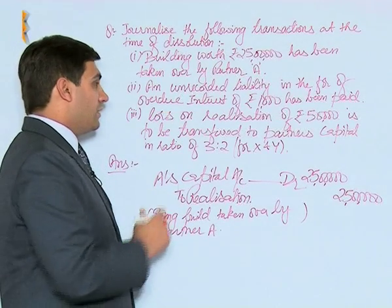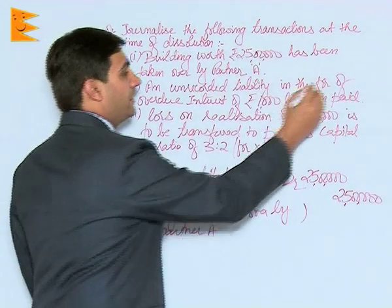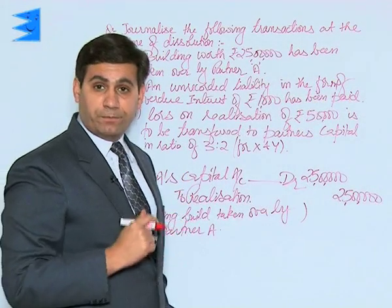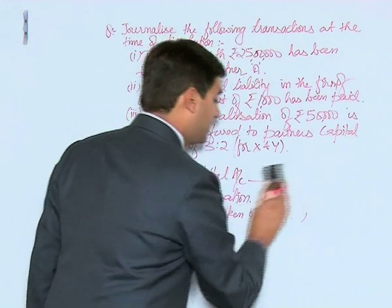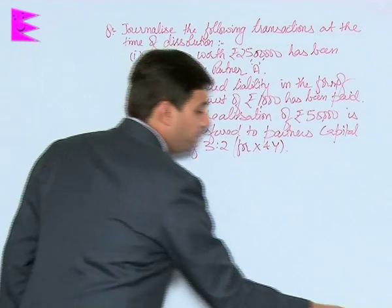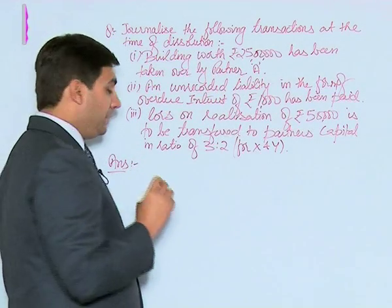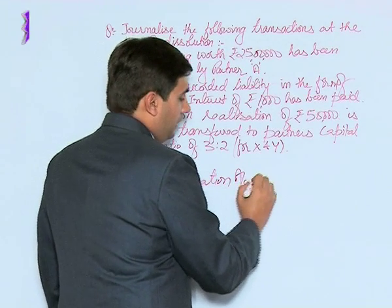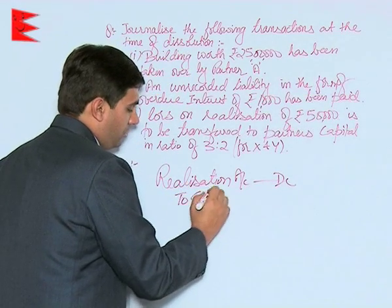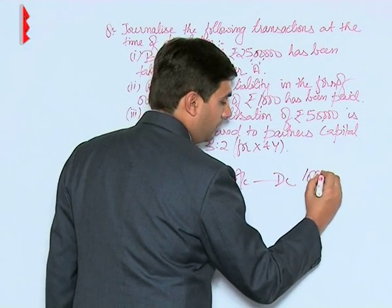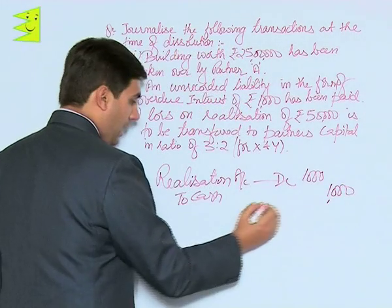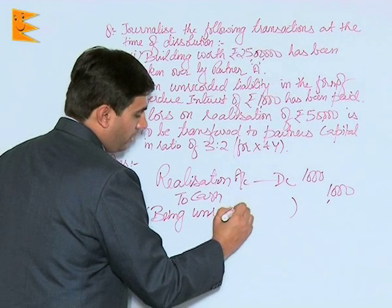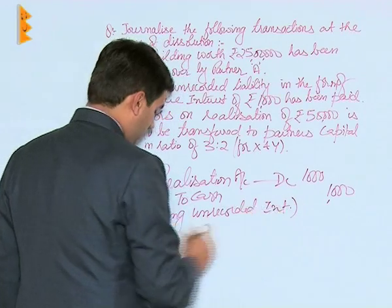Coming to the next journal entry: an unrecorded liability in the form of overdue interest for rupees 1000 has been paid by the firm. In this case, there is an unrecorded liability that has been paid by the firm. The entry would be realization account debited to cash, rupees 1000, being unrecorded interest paid.